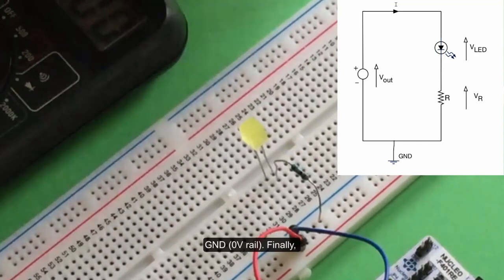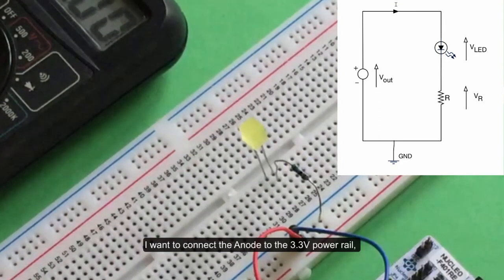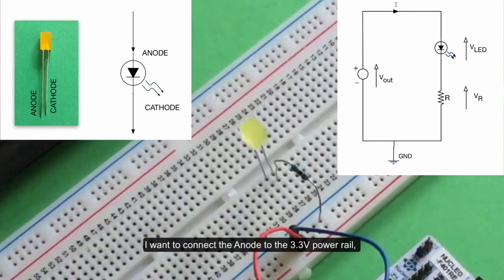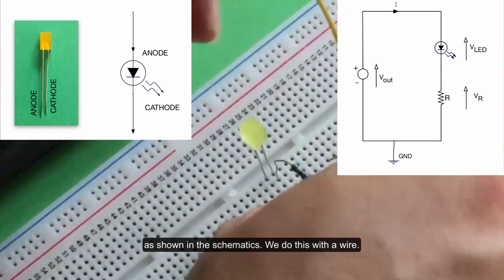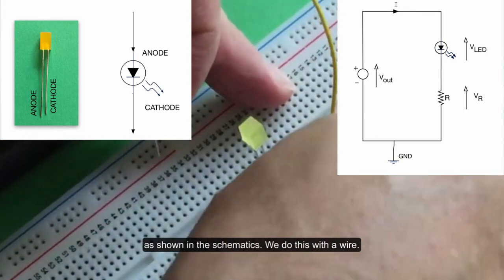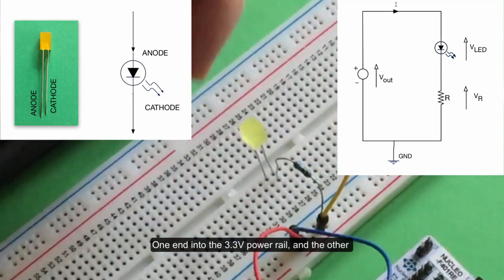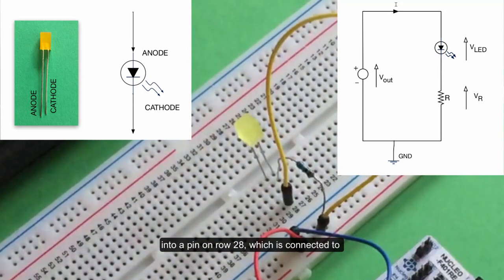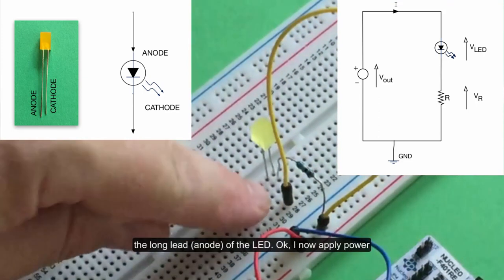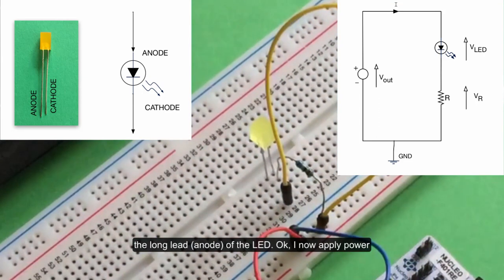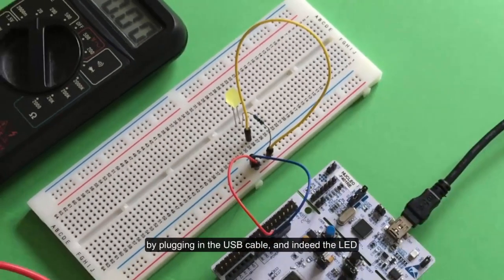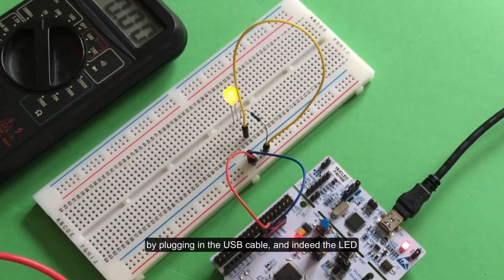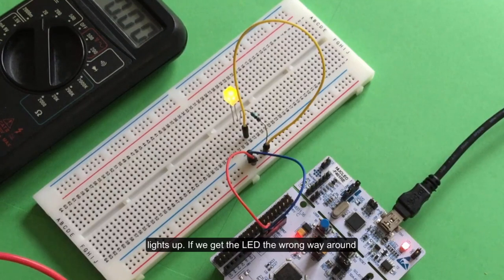Finally, I want to connect the anode to the power as shown in the schematic. We do that with another wire. That goes into the power rail and that can go into a pin on row 28, which is connected to the long lead of the LED. Apply power by plugging in the USB and indeed the LED lights up.